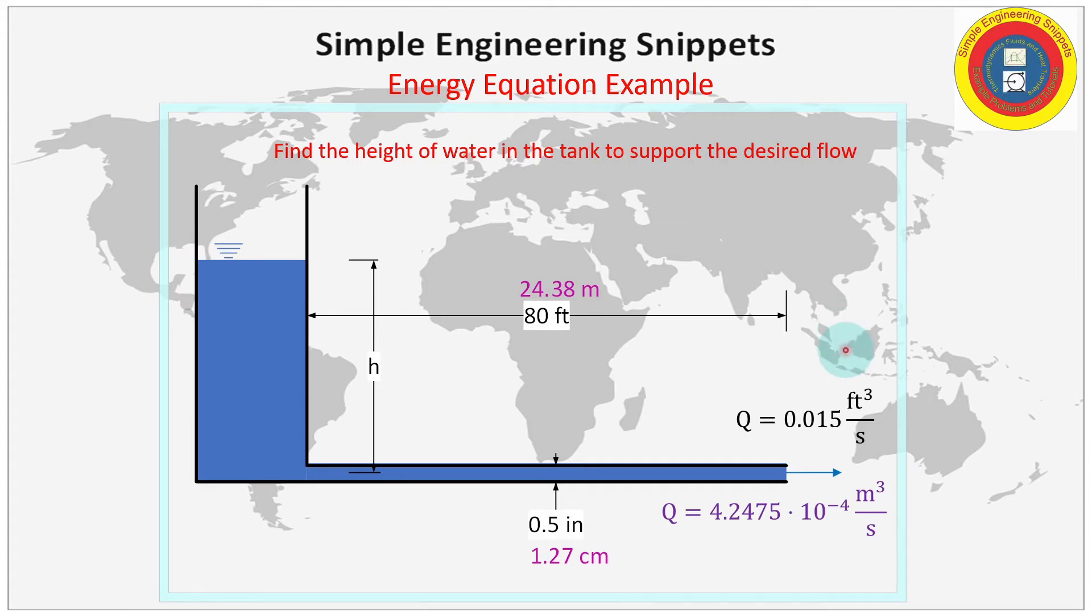Welcome to another Simple Engineering Snippet. In this video we're going to be working through a conservation of energy example where we are going to determine the height of the water necessary to support a required flow rate.